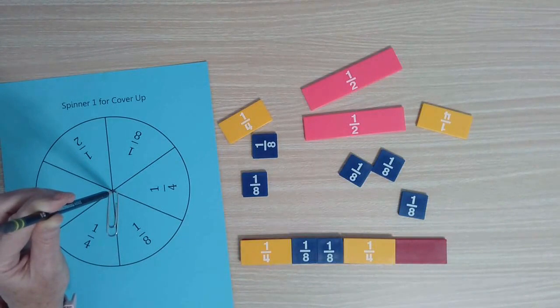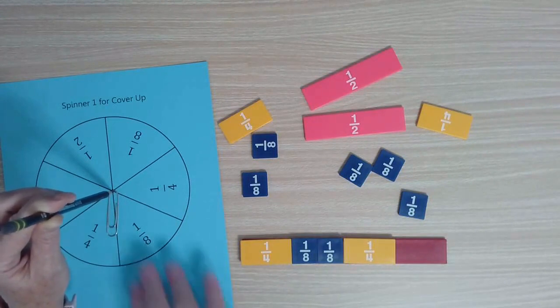I think you should have one-fourth, but another student who recognized those equivalencies might say you could also spin one-eighth twice to cover the whole.